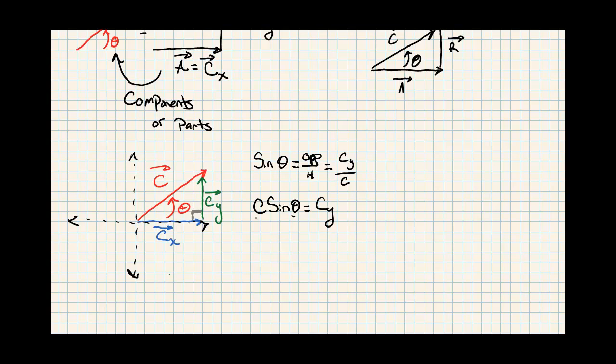So if you know the angle and you know your total vector, you can get the vertical portion. And by the same token, cosine of theta equals adjacent over hypotenuse. Which means that Cx over C. So we multiply up the C the same way. So our C times cosine of theta will give us our horizontal component of this vector.